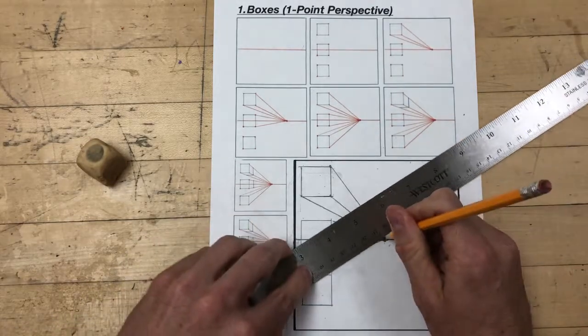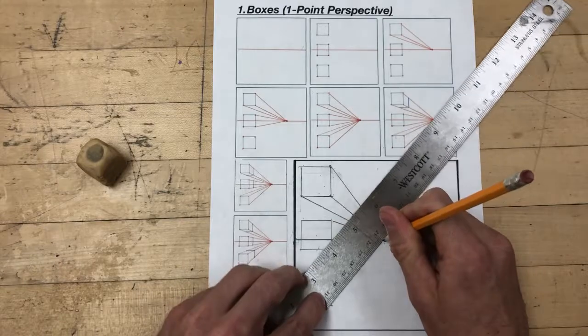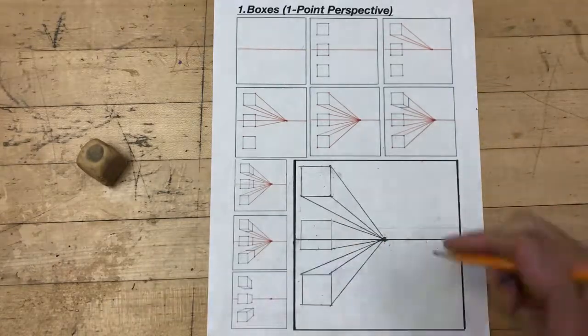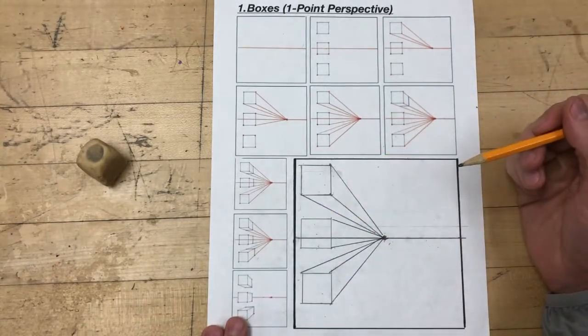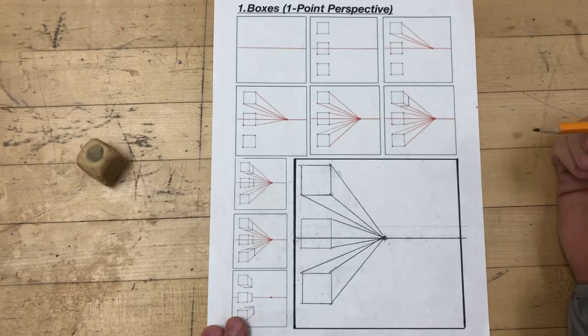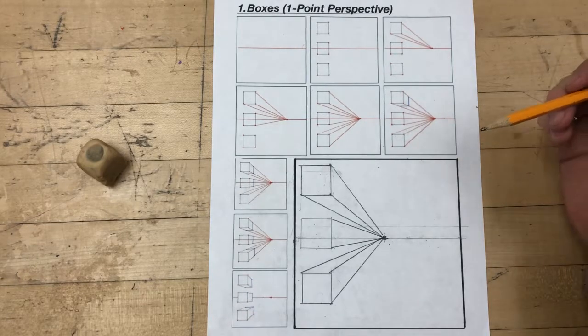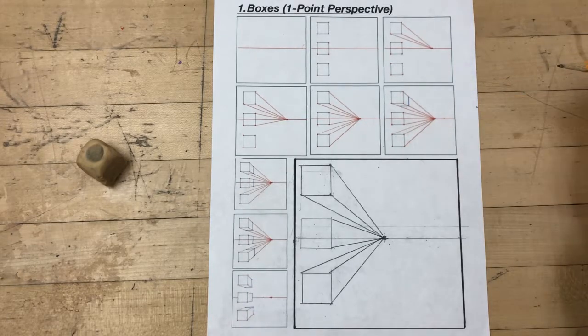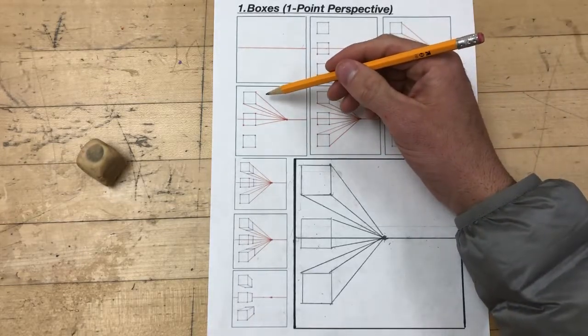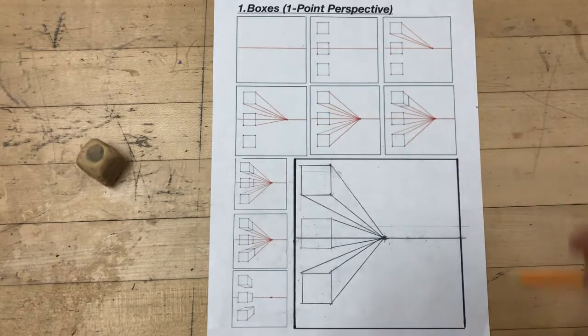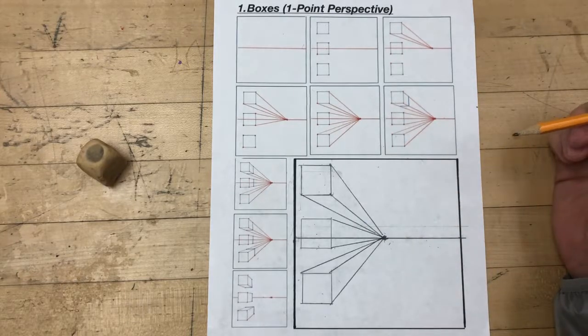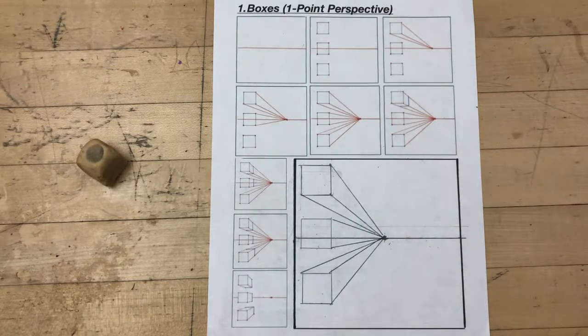These diagonal lines are called orthogonal lines. Orthogonal lines is a phrase you'll hear me use a whole lot through these demonstrations. After we've placed all of our orthogonal lines for the squares, we're going to go ahead and cut off the depth of these perspectives.